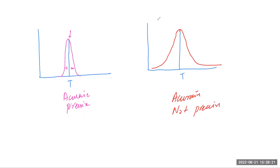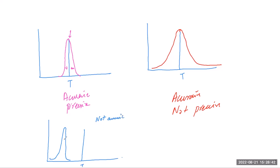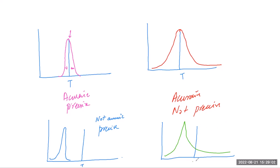In the fourth example, the true value is here but the curve peaks away from it — so the data is not accurate. However, the values are close to each other, so it is precise but not accurate. In another example, the true value is here and the curve is wide and off-center — so this is neither precise nor accurate.